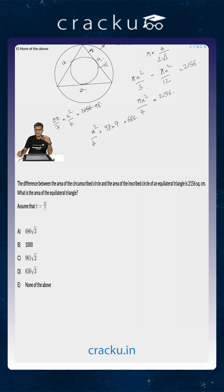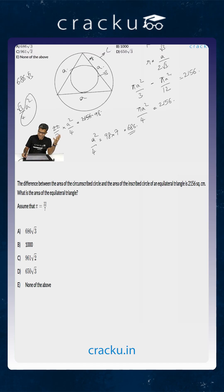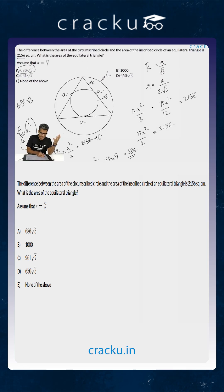We are required to calculate the area of the equilateral triangle. For an equilateral triangle of side a, the area is (√3/4) × a². We know that a²/4 = 686, so the area of the equilateral triangle is 686√3. The answer for this question is option A.